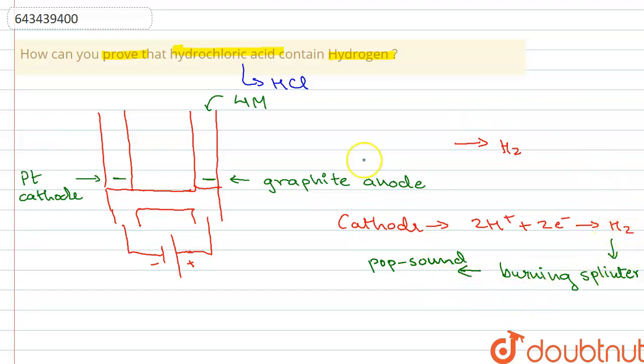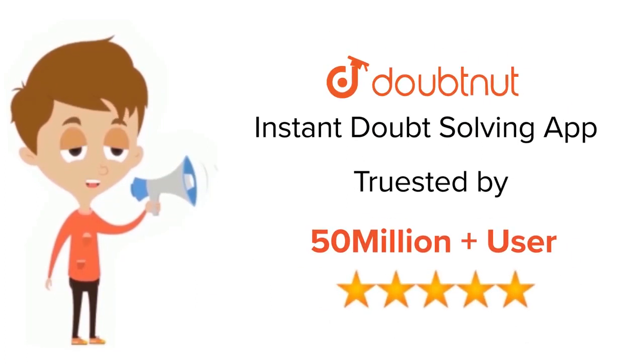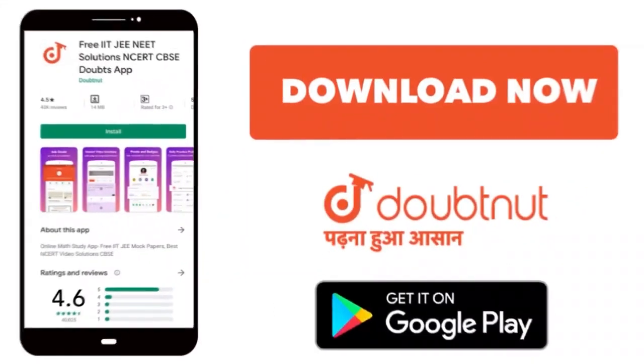That was the explanation. Thank you. For class 6 to 12, IIT-JEE and NEET level, trusted by more than 5 crore students. Download Doubtnet app today.